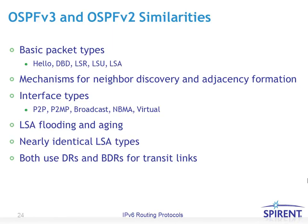Similarities between OSPF version 3 and OSPF version 2 include the same basic packet types: hello, database description packets, link state requests, link state updates, and link state advertisement packets. Mechanisms for neighbor discovery and adjacency formation are the same. Interface types — point-to-point, point-to-multipoint, broadcast, non-broadcast multiple access, and virtual links — are similarly implemented. LSA flooding and aging techniques are the same, LSA types are nearly identical, and both use designated routers and backup designated routers for transit or broadcast links.